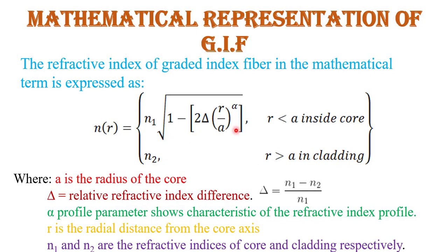In this formula: A is the radius of the core. Δ (delta) is the relative refractive index difference between two materials in the core, and its value is smaller than one — calculated as Δ = (n1 − n2) / n1, where n1 and n2 are the refractive indices of two different materials. α (alpha) is the profile parameter that describes the characteristic of the refractive index profile. R is the radial distance from the center of the fiber, and n1, n2 are the refractive indices of core and cladding respectively.